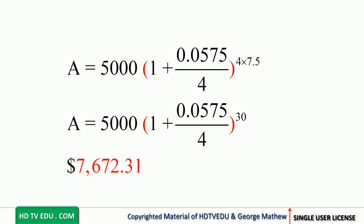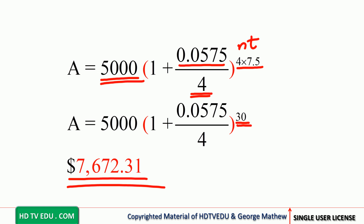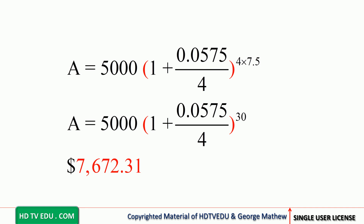Substituting all the numbers: P is five thousand, r is zero point zero five seven five, n is four, and n times t is four times seven point five equals thirty. So it is five thousand times (1 + 0.0575/4) to the power of thirty, which gives seven thousand six hundred seventy two point thirty one.